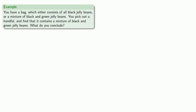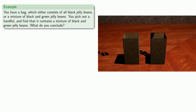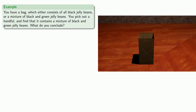As an introductory example, suppose we have a bag which either consists of all black jelly beans or a mixture of black and green jelly beans. We don't know which bag we have. So to decide, we'll pick out a handful of jelly beans and find that it contains a mixture of black and green jelly beans. What do you conclude?